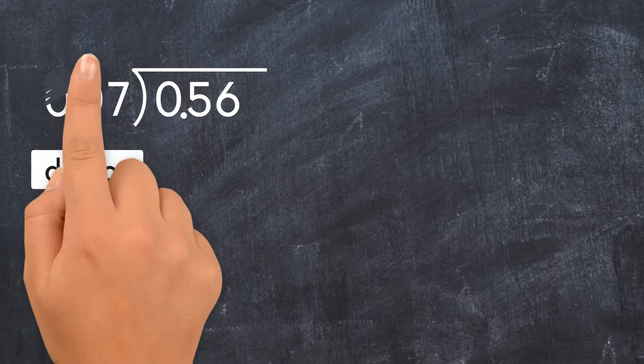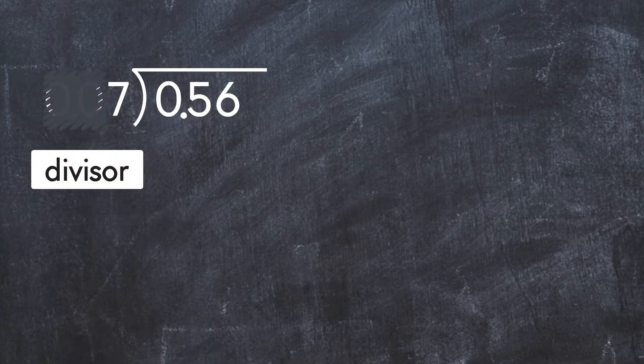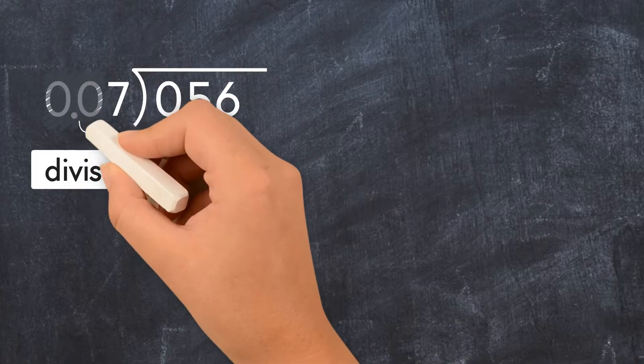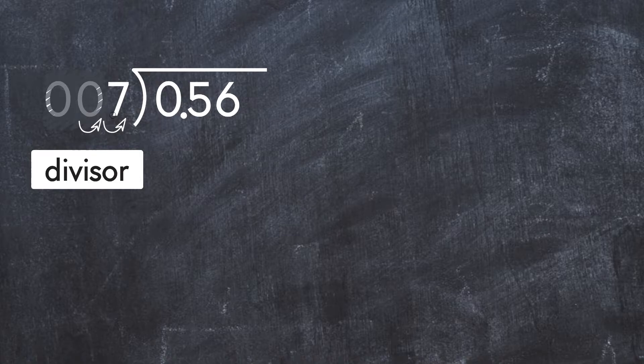But what if we had 7 as our divisor? Then we would know how to divide, because we've done it before. So how can we get from 0.07 to 7, so that we can actually divide? We do this by moving the decimal point two places to the right. To do that, we multiply by 100.